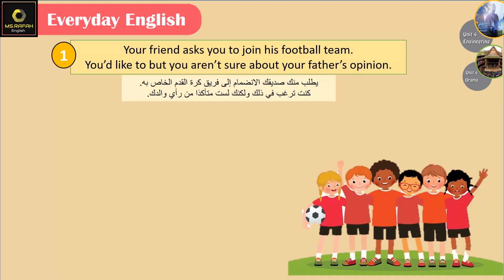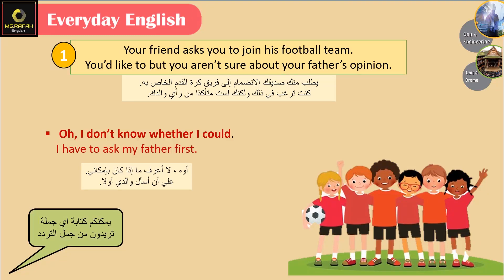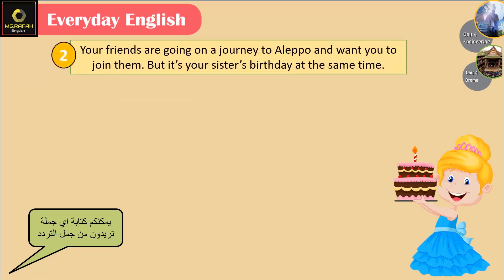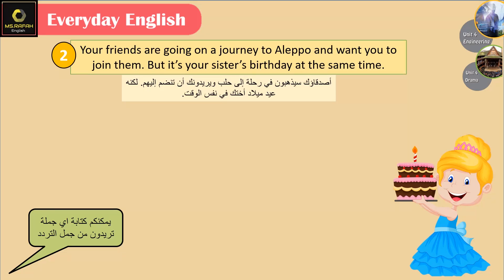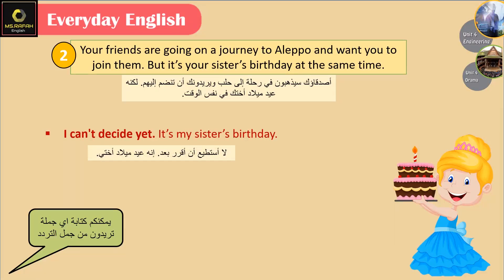We can use other words in the same way. For example: Oh, I don't know whether I could — I have to ask my father first. Situation two: your friends are going on a journey to Aleppo and want you to join them, but it's your sister's birthday at the same time. We can say: I can't decide yet, it's my sister's birthday.